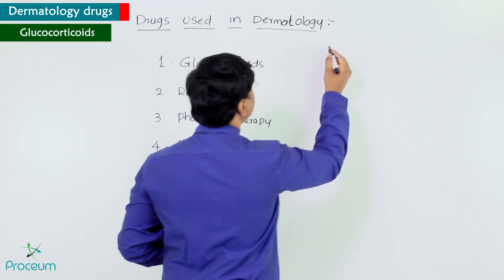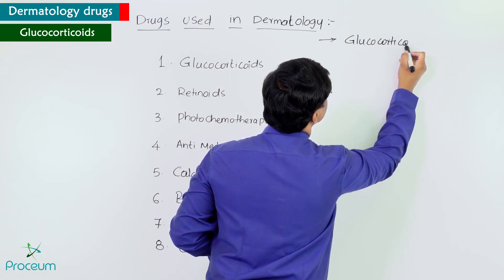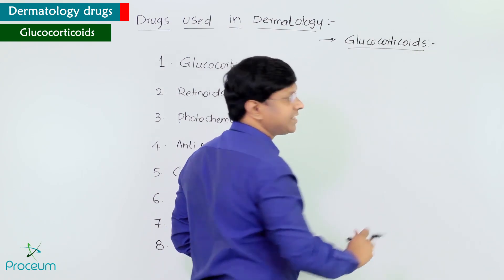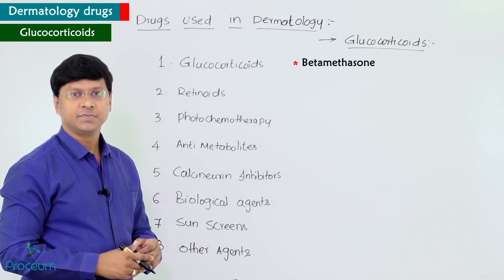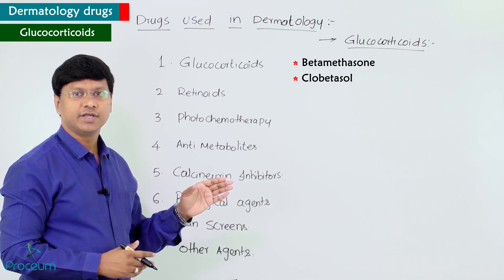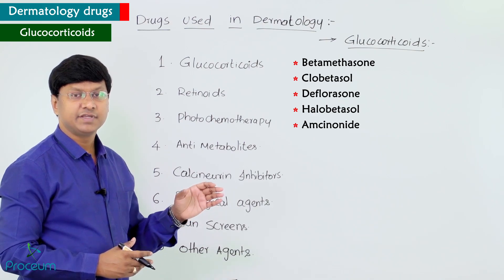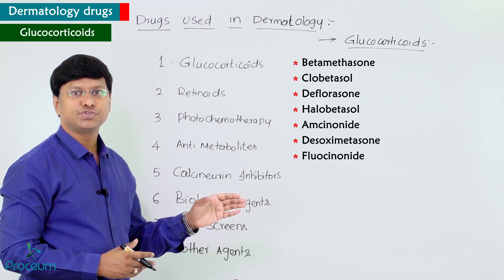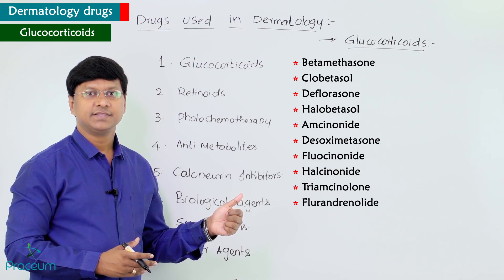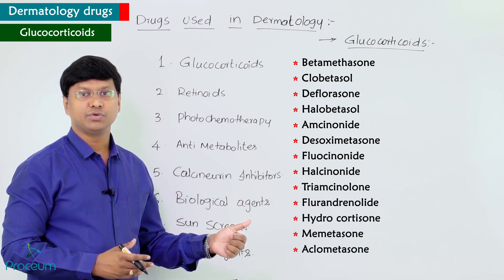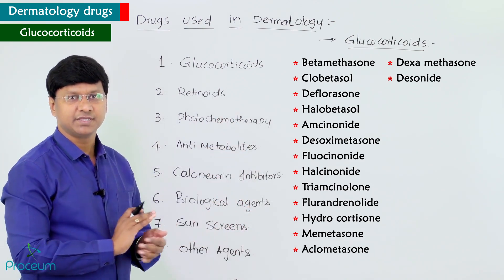First, let me discuss glucocorticoids used in dermatology. The list includes betamethasone, clobetasol, difluorasone, halobetasol, amcinonide, desoximetasone, fluocinonide, halcinonide, triamcinolone, flurandrenolide, hydrocortisone, mometasone, alclometasone, dexamethasone, and desonide. These are the glucocorticoids used topically.